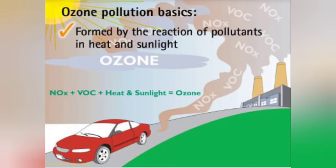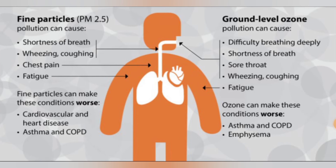Stratospheric ozone is good ozone; tropospheric ozone is bad ozone. Tropospheric ozone is formed by the reaction of pollutants in heat and sunlight. Ground level ozone may cause difficulty breathing deeply, wheezing, coughing, asthma, and it may also cause cardiovascular and heart disease.